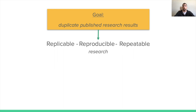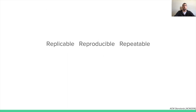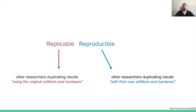These concepts can be used to qualify work in any research field. In this talk, we'll focus on the specificities of computer graphics and computer science. Depending on who uses them, these terms might be defined differently. For instance, the Association for Computing Machinery and the National Academy of Science use opposite definitions. So in this talk, we will follow the ACM definitions such that repeatable research means the authors can duplicate their own work. We leave this concept for now, as it relates more to the research process itself. So we have two concepts which qualify whether other researchers can duplicate results using either the original artifacts produced by the authors or their own artifacts.